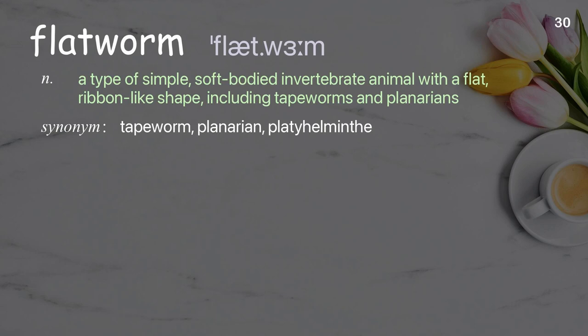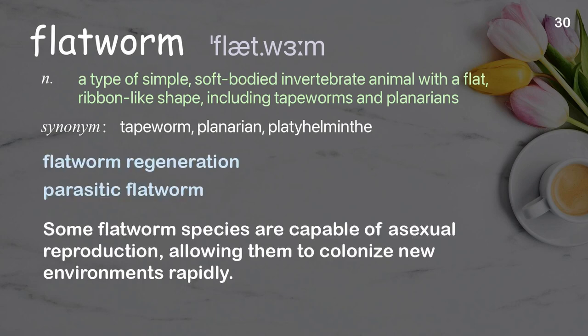Flatworm. A type of simple, soft-bodied invertebrate animal, with a flat, ribbon-like shape, including tapeworms and planarians. Some flatworm species are capable of asexual reproduction, allowing them to colonize new environments rapidly.